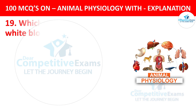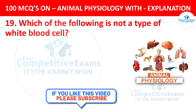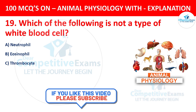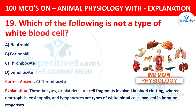Question number 19. Which of the following is not a type of white blood cell? The options are neutrophil, eosinophil, thrombocyte, or lymphocyte. The correct answer is C, thrombocyte. Thrombocytes, or platelets, are cell fragments involved in blood clotting, whereas neutrophils, eosinophils, and lymphocytes are types of white blood cells involved in immune responses.